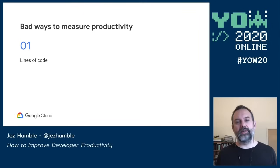There's a limit to this — it's typically possible to solve many problems by writing a single line of Perl which is completely impossible to understand, and we don't recommend that. You want to make sure your code is easy to understand, read, and change. It's not a number we want to minimize necessarily, but we certainly don't want to maximize it. Unfortunately, even today, at performance reviews people talk about the size of a change list as a substantial contribution — but what matters is the impact of that change on the system, end users, and the organization.